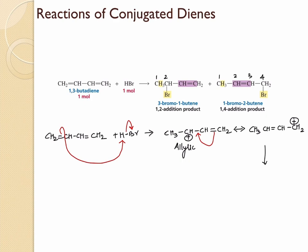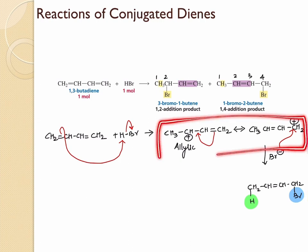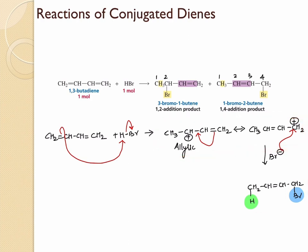In the next step, Br⁻ can attack this carbon to give us the compound we call the 1,4-addition product. You can see the hydrogen has been added to the first carbon and Br is added to the fourth carbon. It is because of the two resonance contributors of the allylic carbocation that it is able to form the 1,4-addition product, and this can only happen in conjugated dienes.